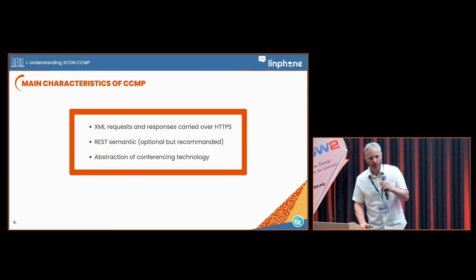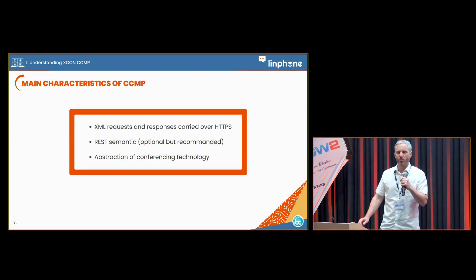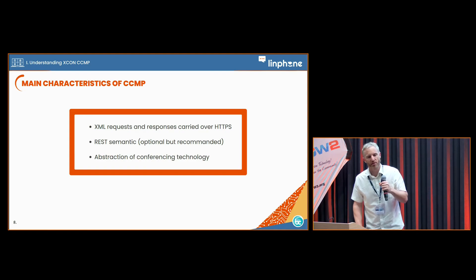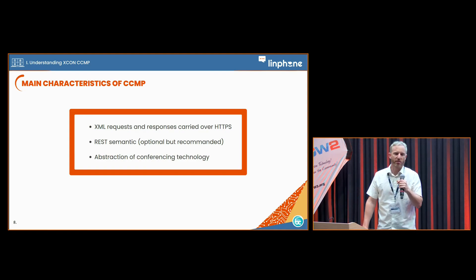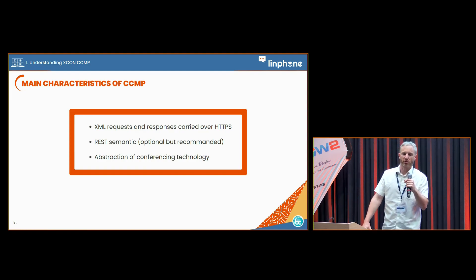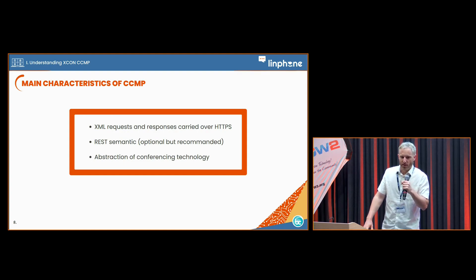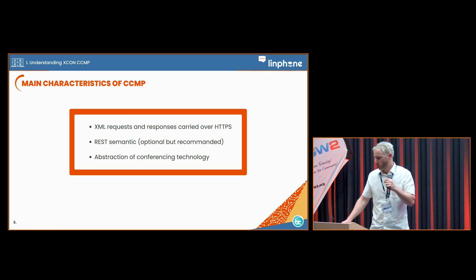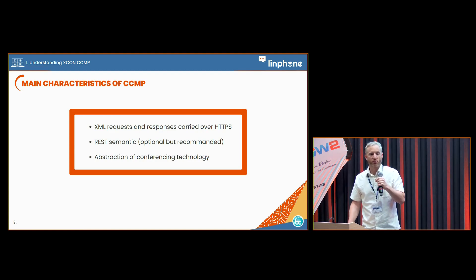The main characteristics of the CCMP protocol are: it's XML-based, carried over HTTPS with REST semantics, and one of its main interests is that it is technology-agnostic in terms of conferencing access method.